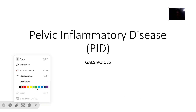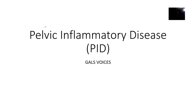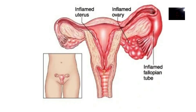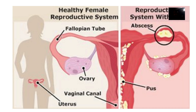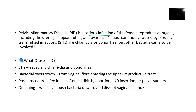Let's quickly look at another condition: PID, pelvic inflammatory disease. Your uterus can get inflamed, your ovaries can get inflamed, your fallopian tubes can also get inflamed. Pelvic inflammatory disease is a serious infection of the female reproductive organs, affecting the uterus, fallopian tubes, and ovaries. It is mostly caused by sexually transmitted disease.